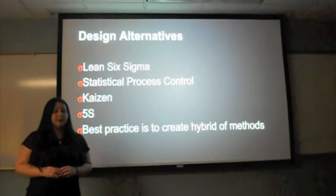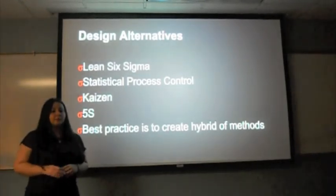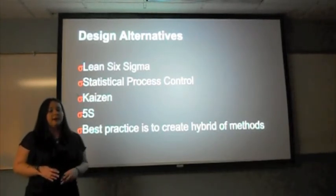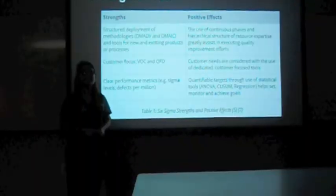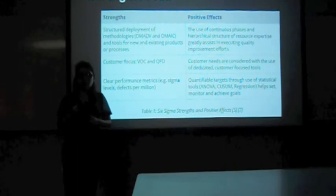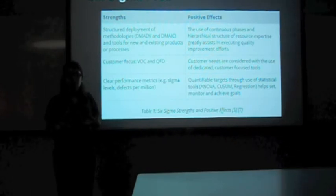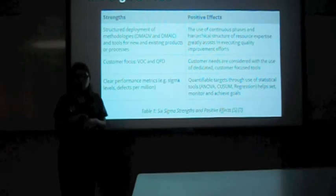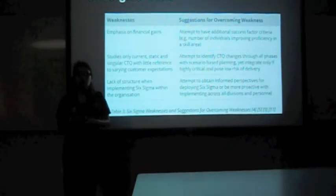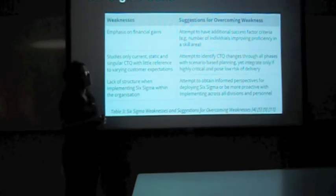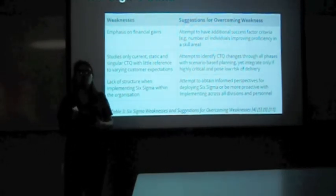It is important to note that while there are different process improvement measures, a task does not need to be exclusively tackled by one method. Usually Six Sigma's tools can be mixed and matched with another process to help create a hybrid of improvements to better suit a company's goals. Six Sigma has both pros and cons. The DMADV and DMAIC methods are two methods strongly used in executing quality improvement throughout many different companies. Customer focus and clear performance metrics are also important for success in Six Sigma. The next slide shows cons such as emphasis on financial gains and lack of structure when implementing Six Sigma, along with suggestions on how to overcome those cons.